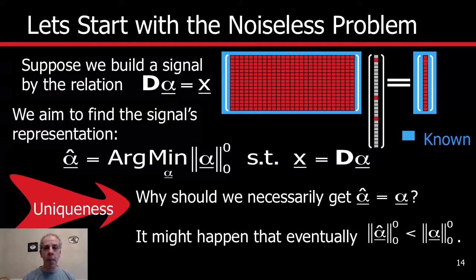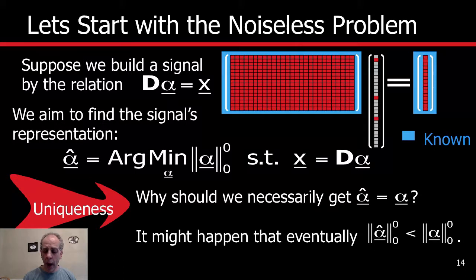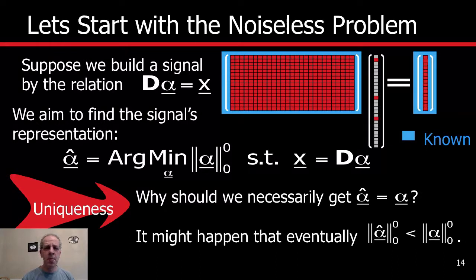There are a number of questions. One is: with whatever algorithm we produce here, why are we expected to get exactly the same alpha that produced the signal? In other words, is that alpha unique? Can you think of a scenario where alpha is not necessarily unique? And can you think of a scenario where alpha will be unique? Let's think for a second about that problem.